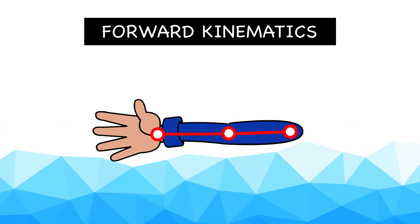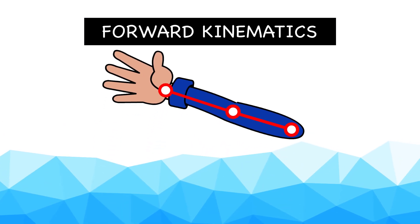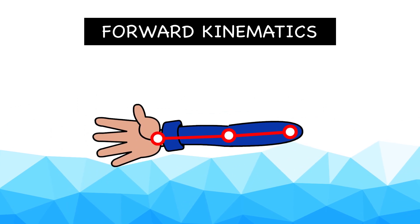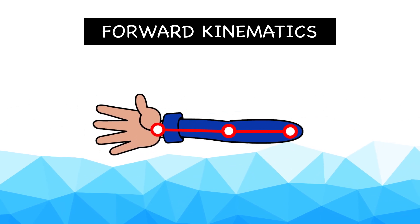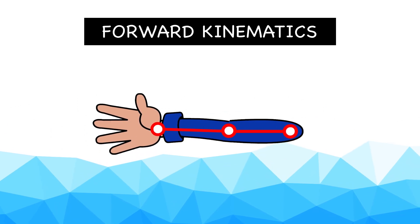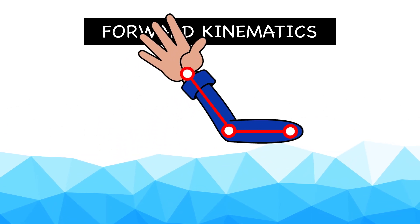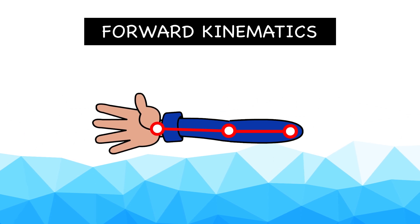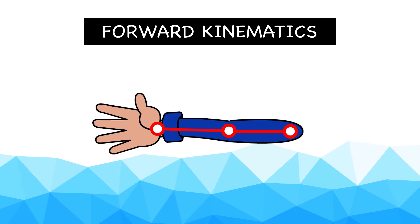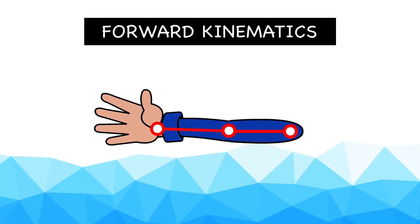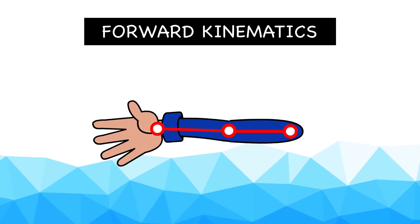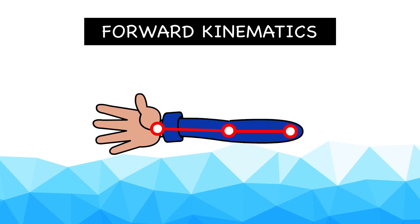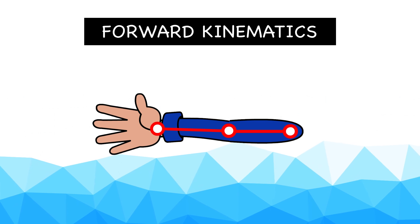If I were to move my upper arm, my forearm and hand are gonna move along with it. If I move my forearm, my hand is gonna move along with it. This also provides a natural arc to the movement, which is one of the core principles of animation.